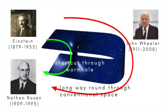In 1935, Einstein and Nathan Rosen further explored the theory of intra and inter-universe connections in a paper whose actual purpose was to try to explain fundamental particles, such as electrons, in terms of spacetime tunnels threaded by electric lines of force. Their work gave rise to the formal name Einstein-Rosen bridge, for what the physicist John Wheeler would later call a wormhole.